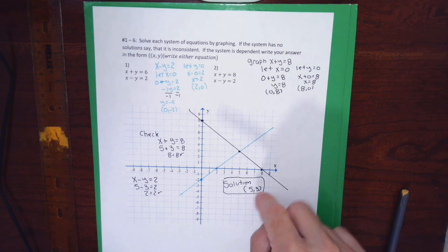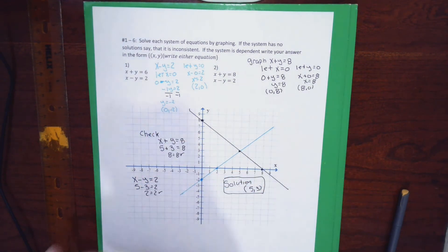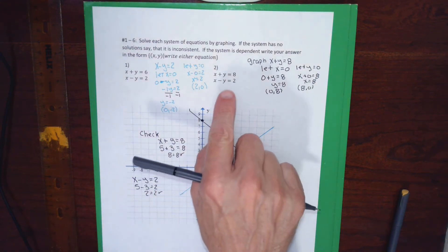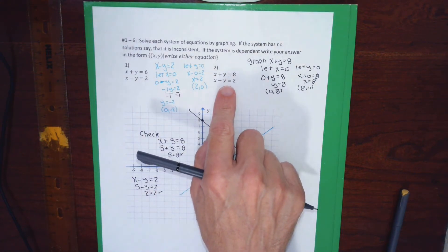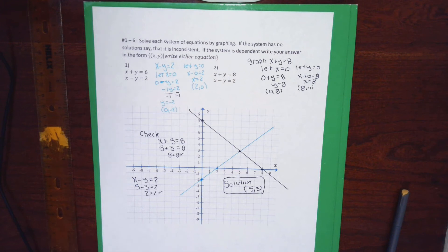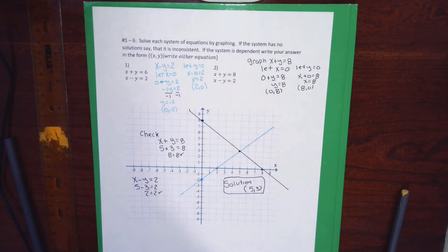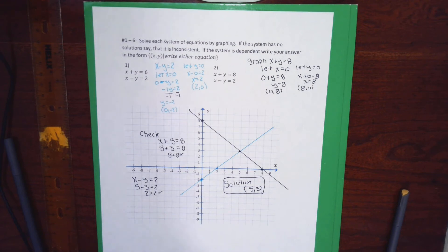This system of equations has a single solution: the point (5, 3), and I've checked it. Once we get to problem seven and beyond, we'll learn how to solve without graphing, because graphing gets very tedious. It's hard to get an accurate enough graph for most systems of equations without technology, since the numbers can get unwieldy.